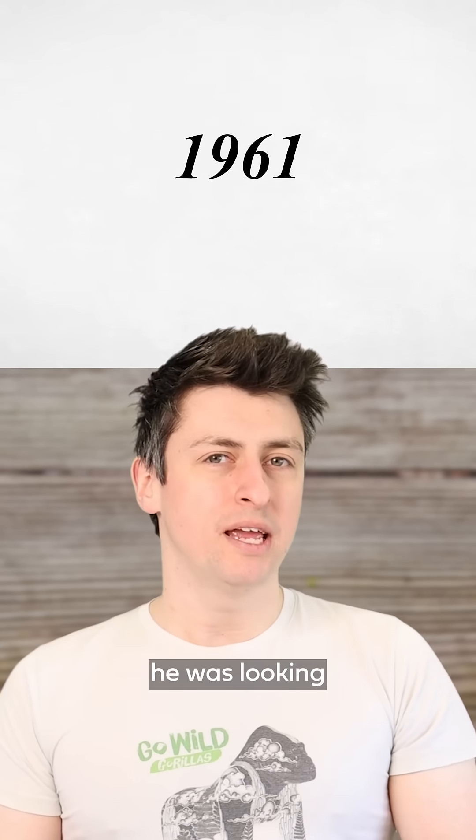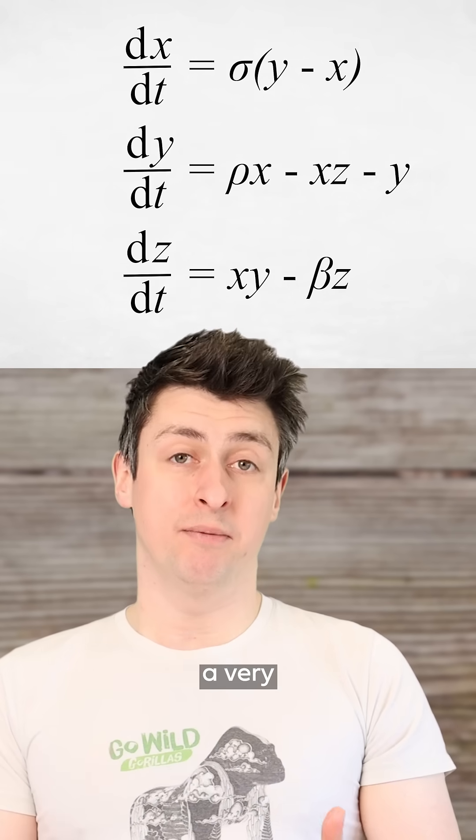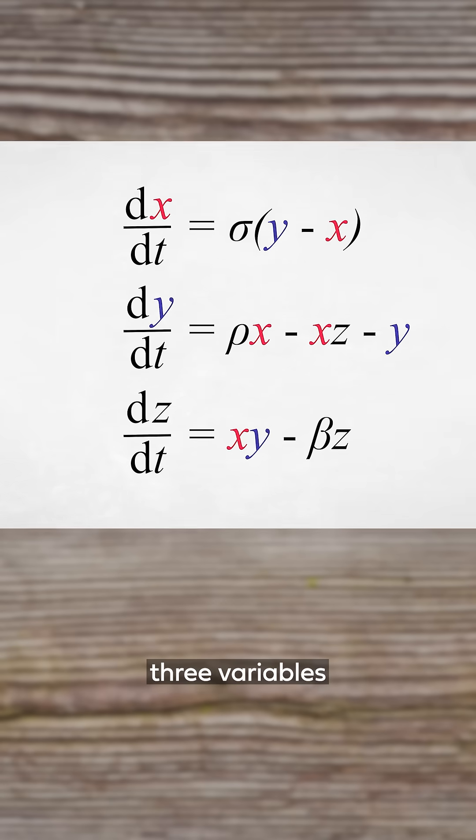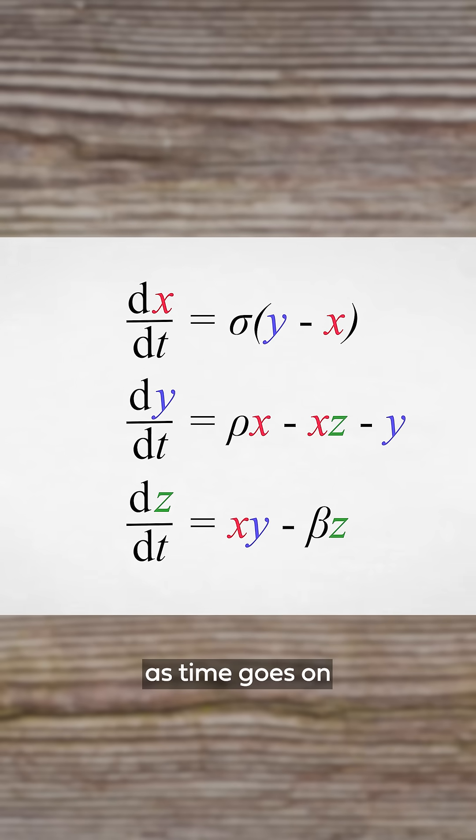In 1961, he was looking at a set of three simple equations that represented a very simple dynamical model of the Earth's atmosphere. These equations tell you how three variables, x, y, and z, evolve as time goes on.